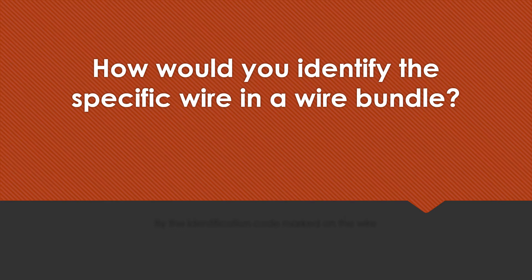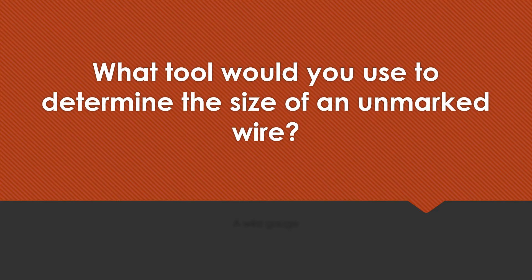How would you identify the specific wire in a wire bundle? By the identification code marked on the wire. What tool would you use to determine the size of an unmarked wire? A wire gauge.